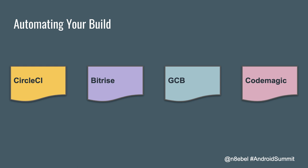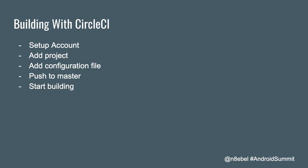To build with CircleCI, there are a few things you need to do — these will be very similar regardless of what platform you choose. You're going to want to set up an account, add your GitHub project to your CircleCI dashboard, and then add a configuration file with your build tasks. Push that file to master, merge it in, and once that's done, you'll be able to start building your project anytime new commits or PRs are created in that repo.